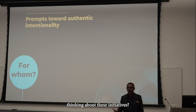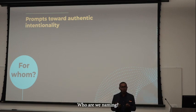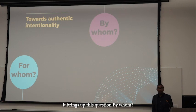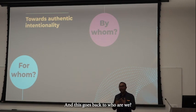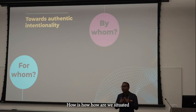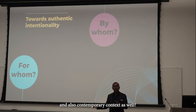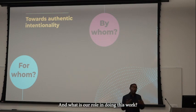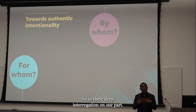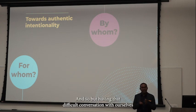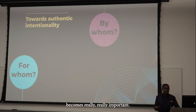When we're thinking about our efforts and initiatives, who are we naming? Why are we doing this work? Who is it supposed to be meant for? This brings up the second question: by whom? Who are we, and how are we situated within the racial politics of the United States and larger historical and contemporary contexts? What is our role in doing this work? It means deep interrogation on our part. Sometimes the answer might even be that it's not our role to do it — and having that difficult conversation with ourselves is really important.